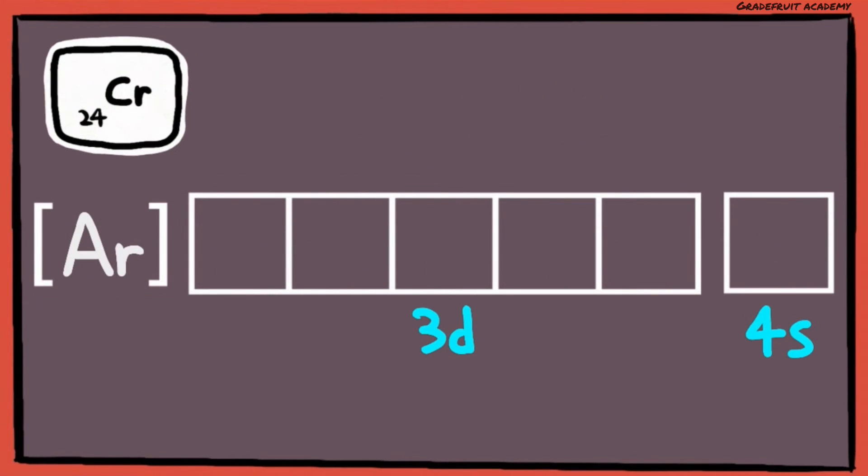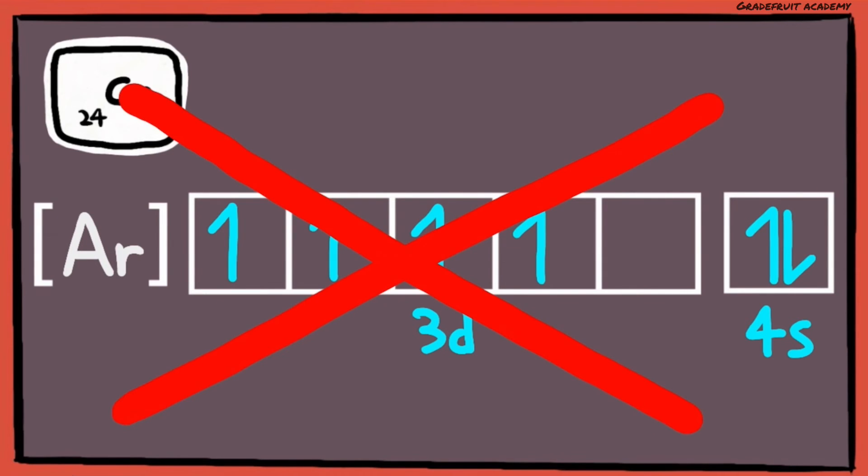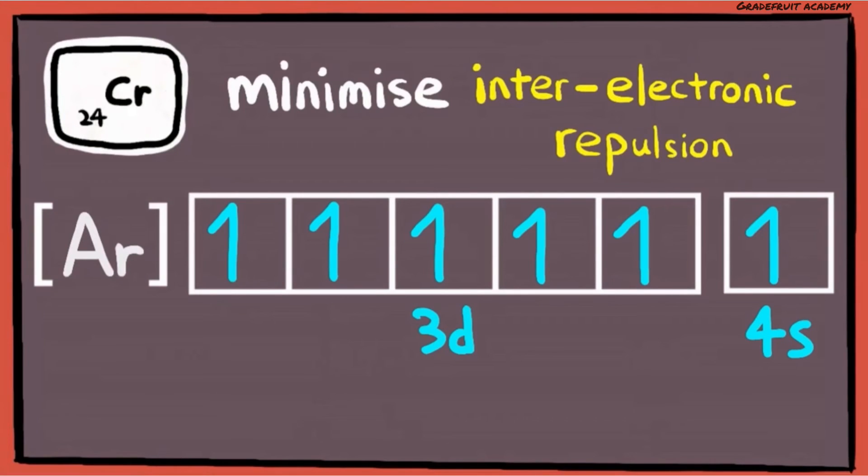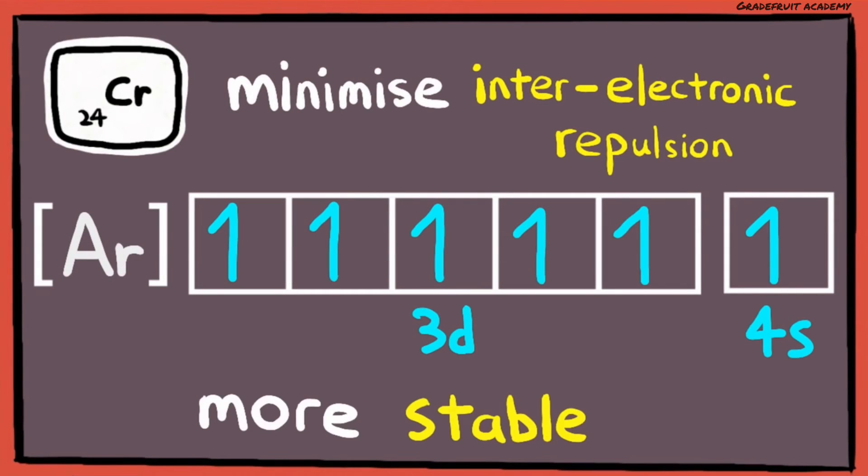For chromium, it has 24 electrons, and we will expect initially the electrons to fill up the 4s orbitals first. But instead, the electrons will be spread across the 3d and 4s orbitals evenly because this will minimize the inter-electronic repulsion between the electrons. Hence, making this configuration much more stable.